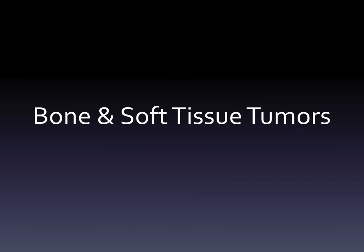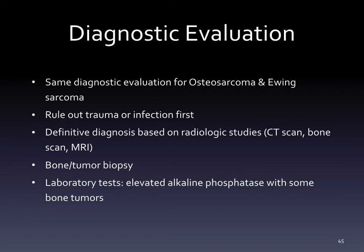For bone and soft tissue tumors, including osteosarcoma and Ewing sarcoma, the diagnostic evaluation is the same: first rule out trauma or infection, then use radiologic studies - CT scan, bone scan, or MRI - for definitive diagnosis. A bone or tumor biopsy can also be completed. Lab tests may show an elevated alkaline phosphatase (ALKFOS) with some bone tumors.